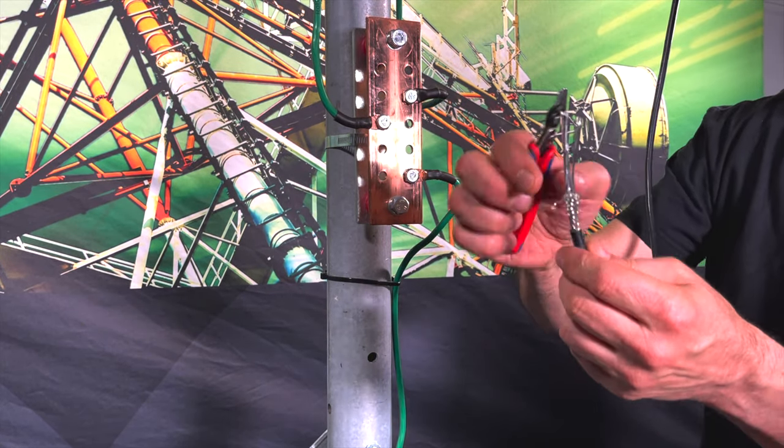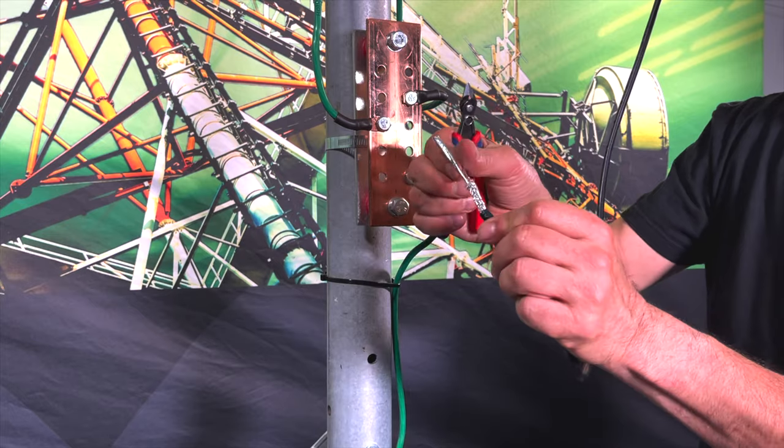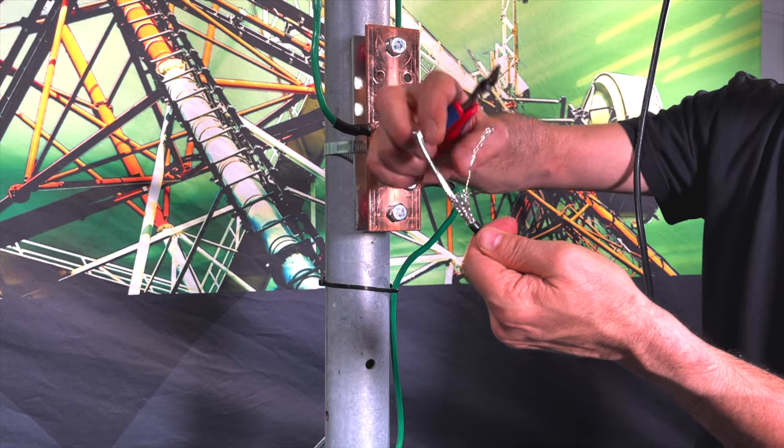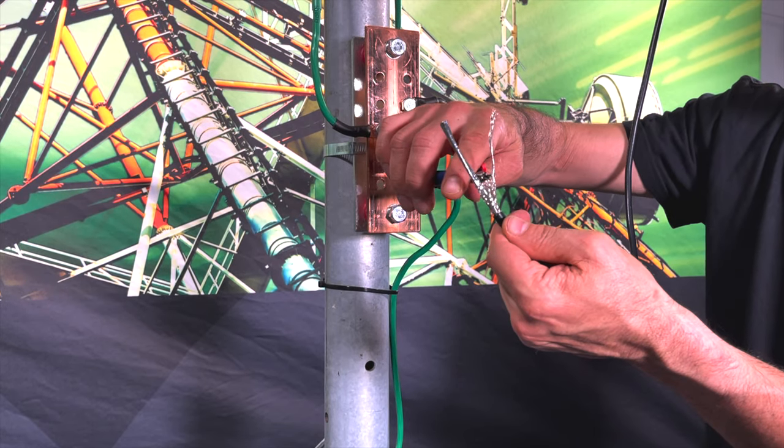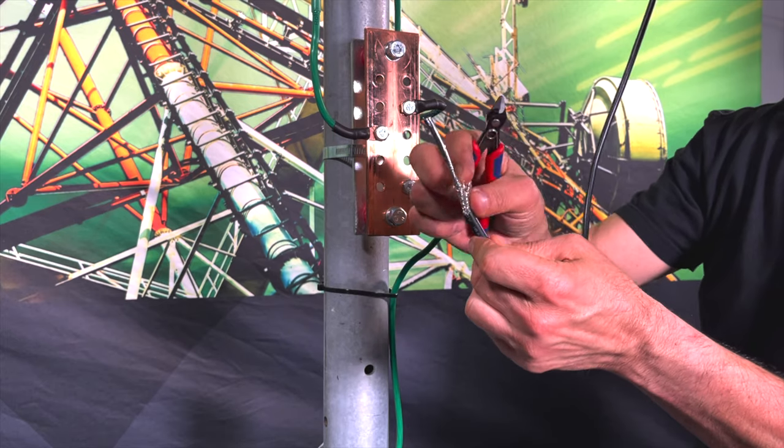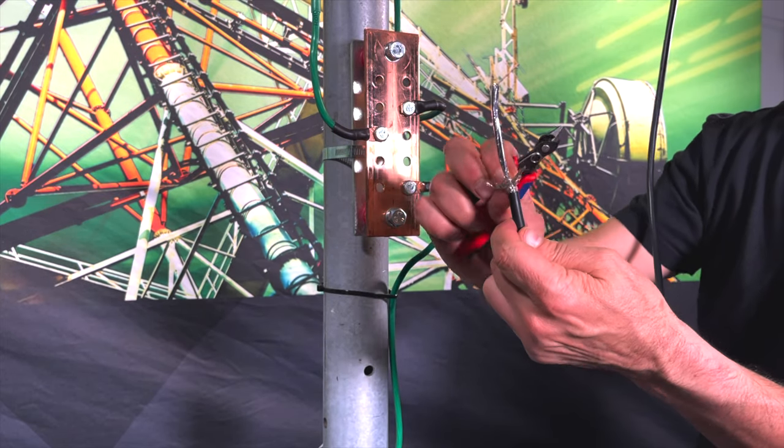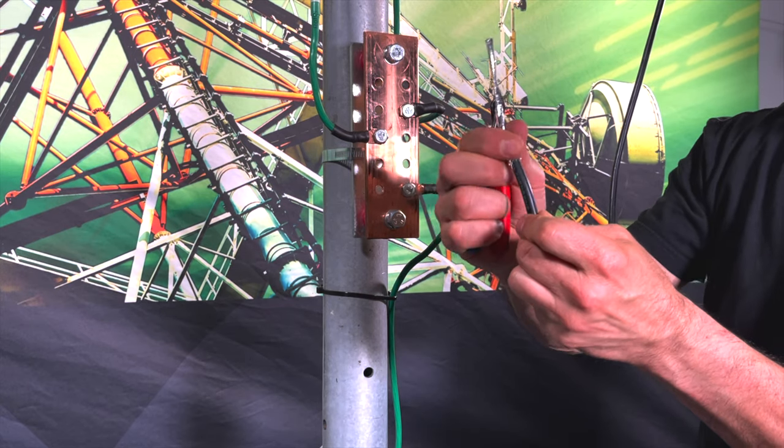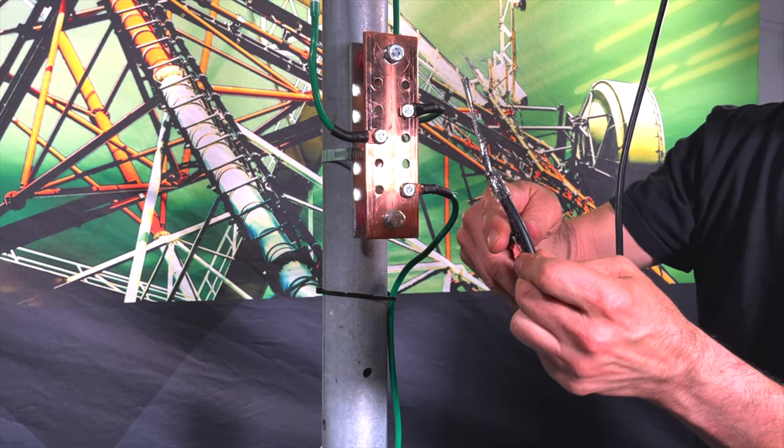Once the braid is removed, we're going to take and cut our 16 gauge ground wire to about the same length, about one inch of that will be exposed. Now, what we're going to do is fold all of this backwards over the jacket of the cable, so it's pulled back. We'll clean this up a little bit.